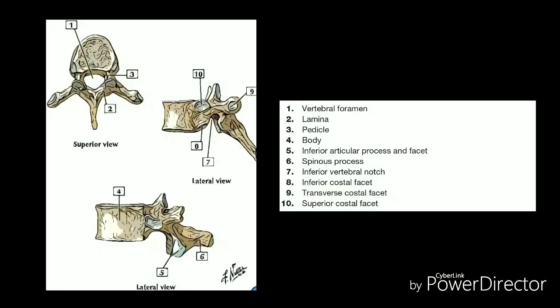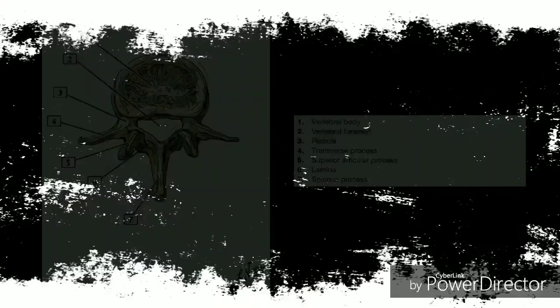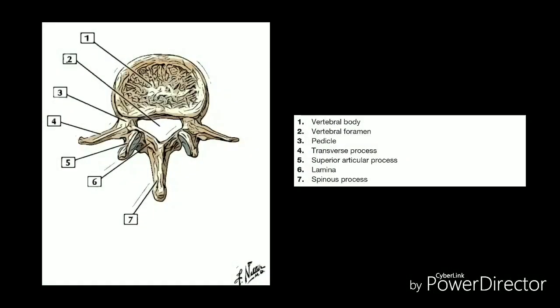The twelve thoracic vertebrae are numbered T1 to T12. The range of motion in the thoracic spine is limited.